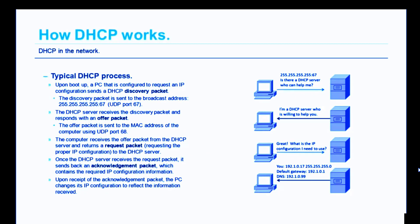Here is the typical DHCP process. Upon boot up, a PC configured to request an IP configuration sends a DHCP discovery packet. The discovery packet is sent to the broadcast address 255.255.255.255 on UDP port 67. The DHCP server is listening on that port for that discovery packet. When the DHCP server receives the discovery packet, it responds with an offer packet — basically saying, "I'm here to help."